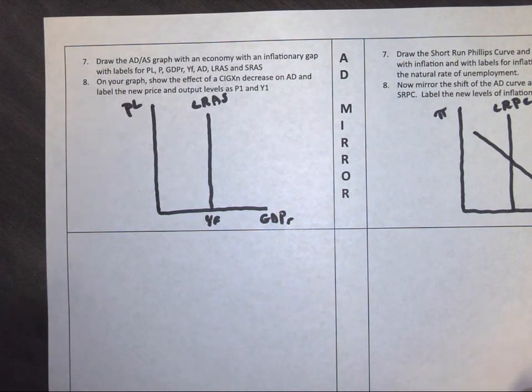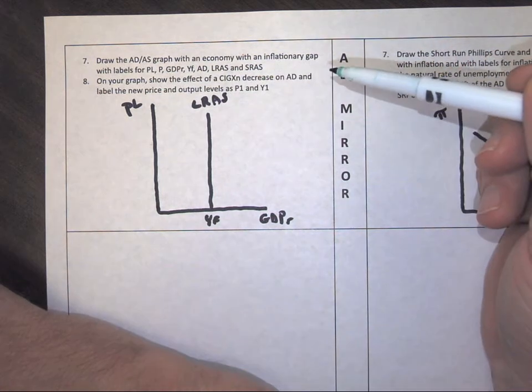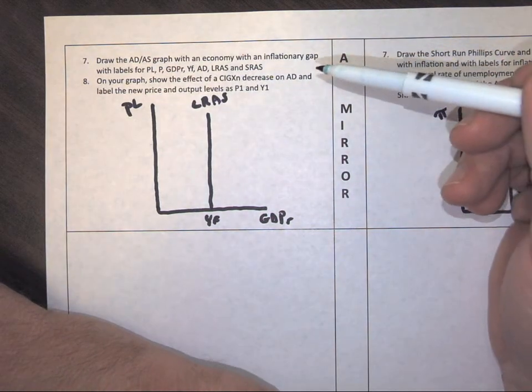Okay, now to the last one. It's number seven and eight. So the last one was an economy that had a recession. Remember, we only have two problems in AP macro: recession and inflation.